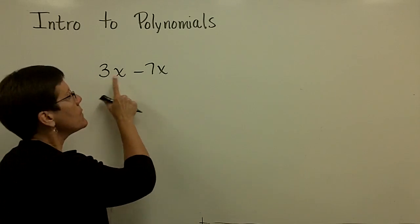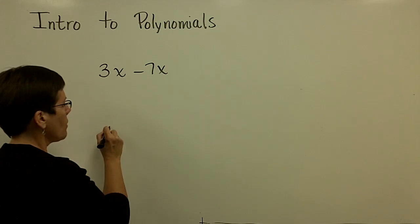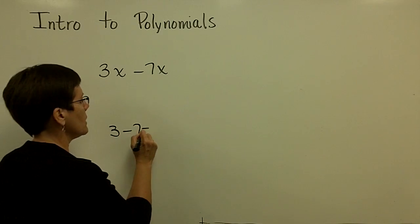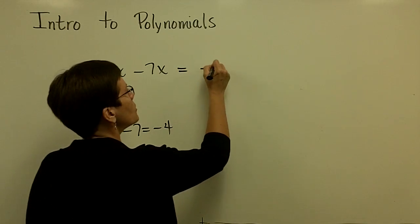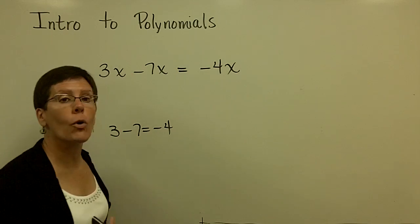So this coefficient is 3. That one's a -7. 3 minus 7 is -4. So when you collect these two, you will have -4x.